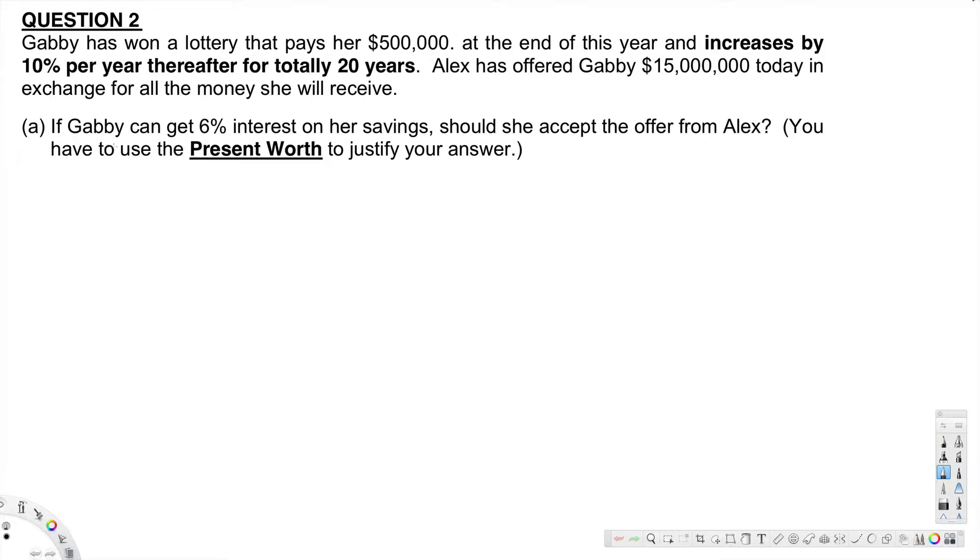Part A is asking: if Gabby can get 6% interest on her savings, should she accept the offer from Alex? You have to use present worth to justify your answer.